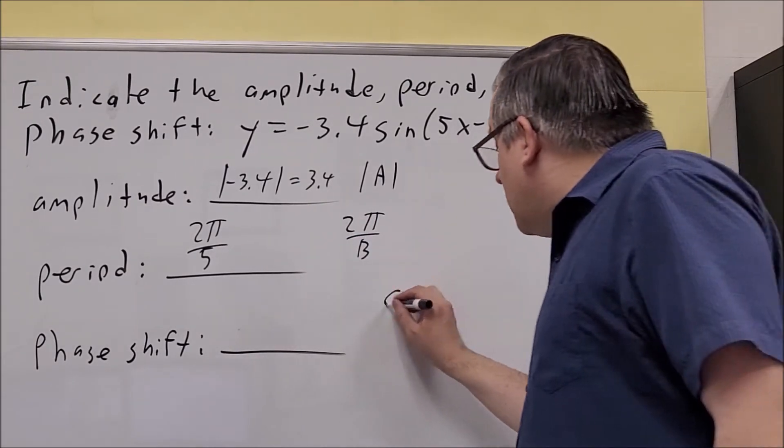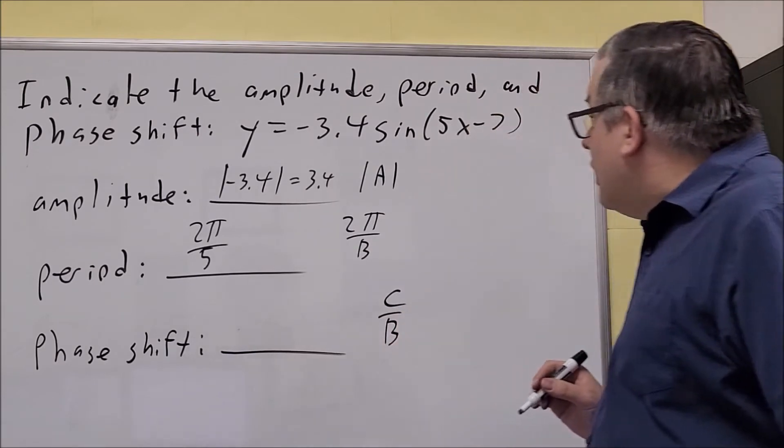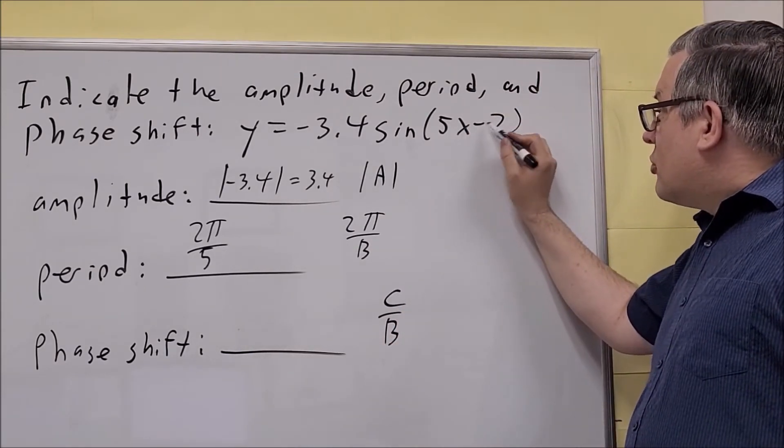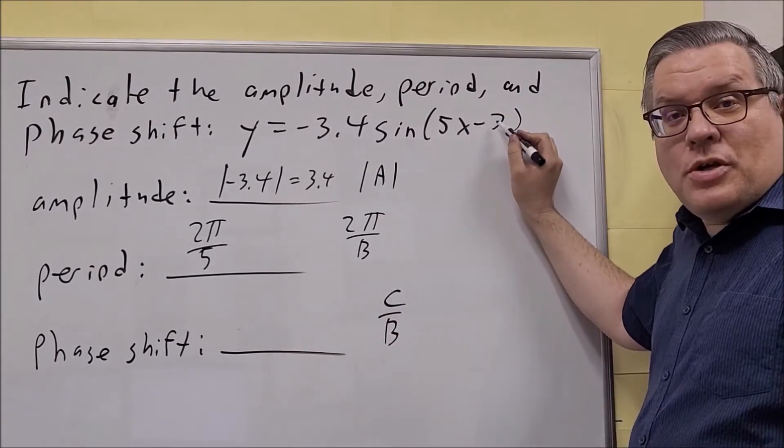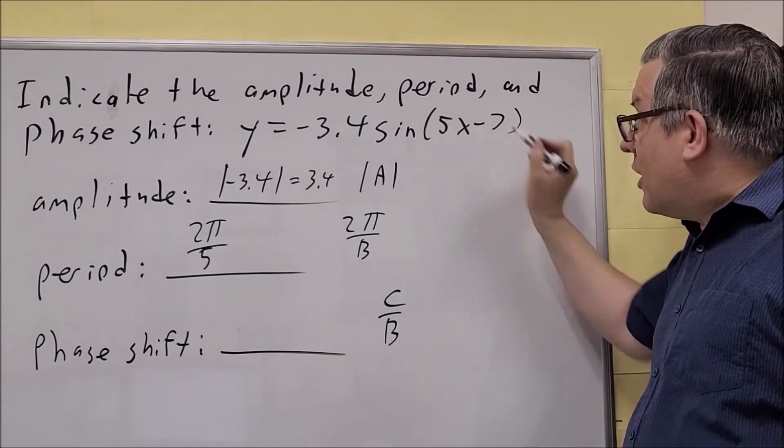Phase shift, the formula is C over B. Okay, so if there's a minus there, then the C, this ends up being positive. You're essentially, again, you're taking the opposite sign.